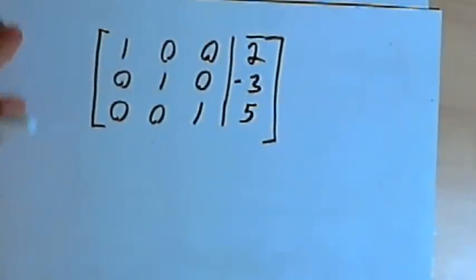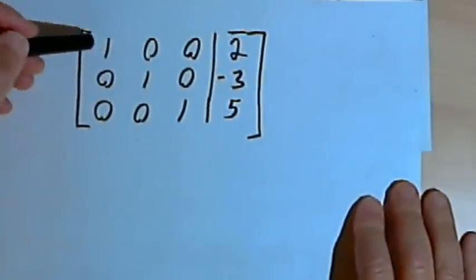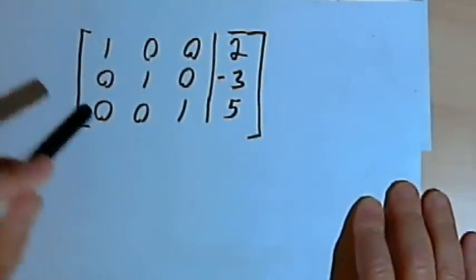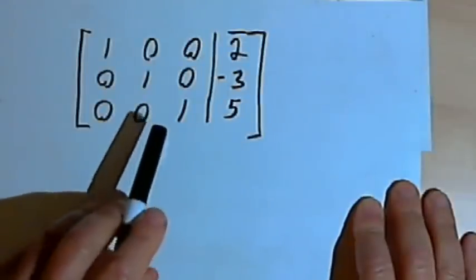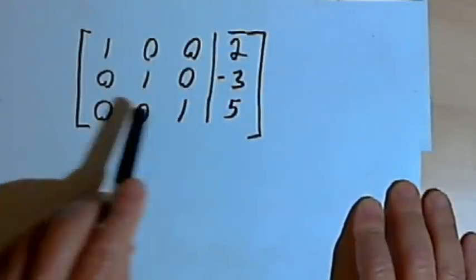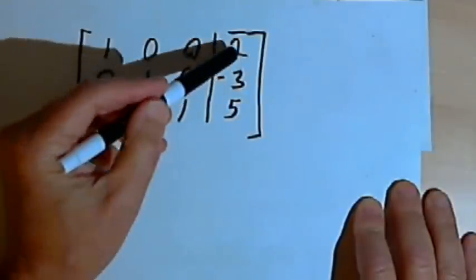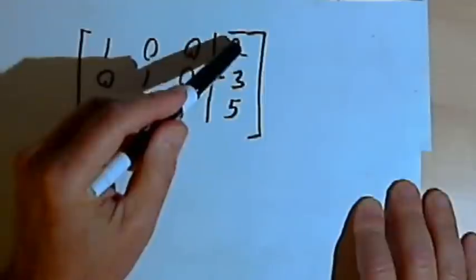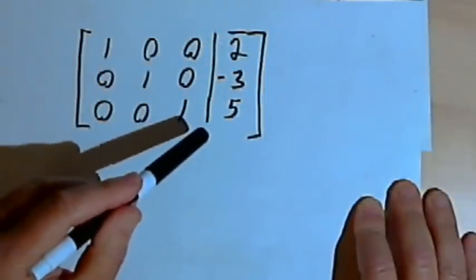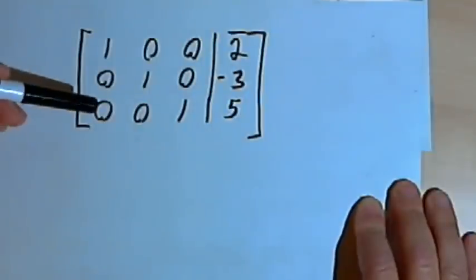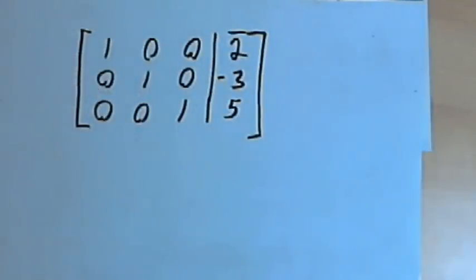When you're working with a system of equations and trying to solve them with an augmented matrix, your goal is to get something that looks like this — an augmented matrix where the left side is the identity matrix. That means on the right side you'll have the numbers which are the solution to your original system of equations. When this happens, you've got one solution.